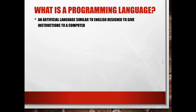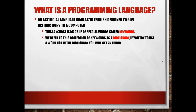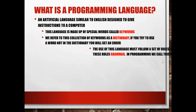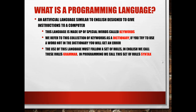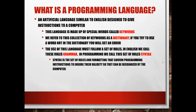A programming language is an artificial language that's similar to English and designed to give instructions to a computer. The language is made up of special words which we call keywords, and we refer to this collection of keywords as a dictionary. If you try to use a word that's not in the dictionary, you get an error — the computer is not sure what to do with it. The use of this language must follow a set of rules. In English we call these rules grammar; in programming we call this set of rules syntax. Syntax refers to errors in how you're typing — are you following the proper rules that will lead to those keywords executing in your program?